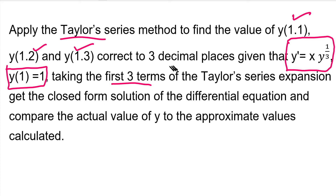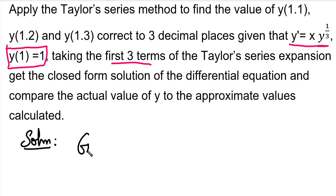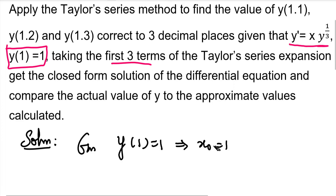Given y(1) = 1, this gives us x₀ = 1 on the left-hand side and y₀ = 1 on the right-hand side.